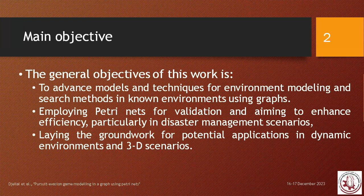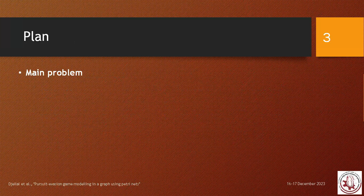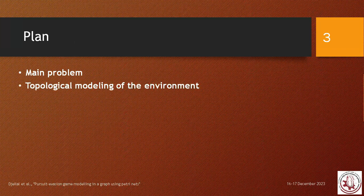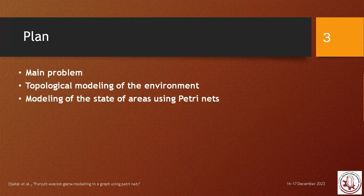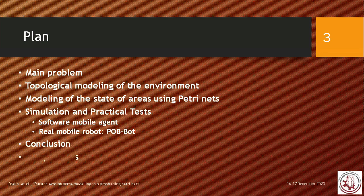This work also establishes a groundwork for potential applications in dynamic environments and 3D scenarios. In this presentation, I will give a brief overview of the main pursuit evasion problem, then present the topological modeling of the real environment, how to model this environment using a graph model with Petri nets, and finally some practical simulation tests using the mobile agent software and a real mobile robot called the Pop Bot. We finish with conclusions and perspectives.